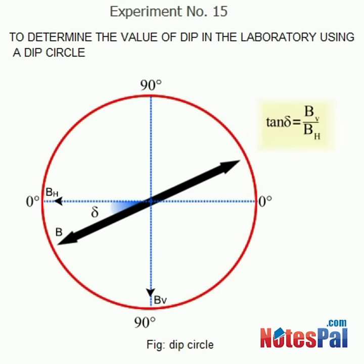It is given by tan delta equals BV by BH. A dip circle consists of a freely suspended pivoted magnet needle. It is used to determine the angle of dip.